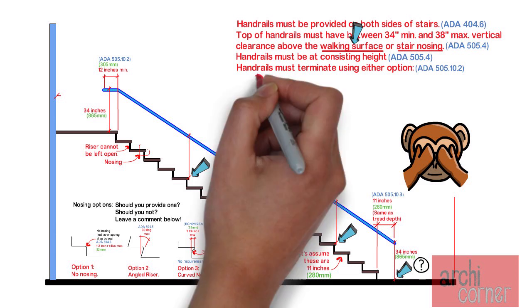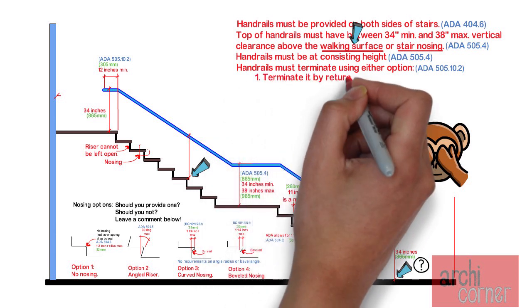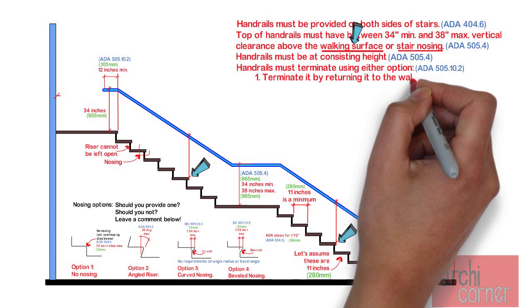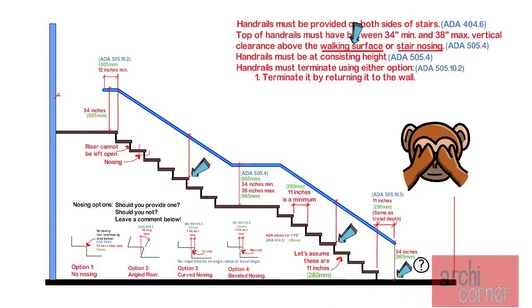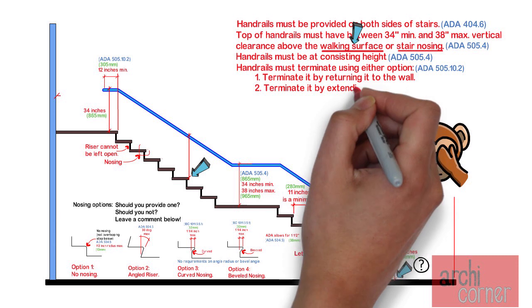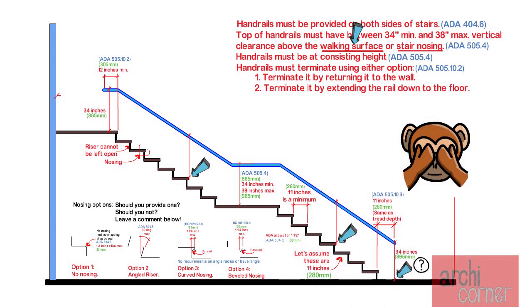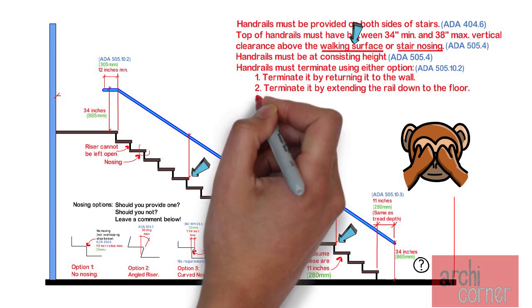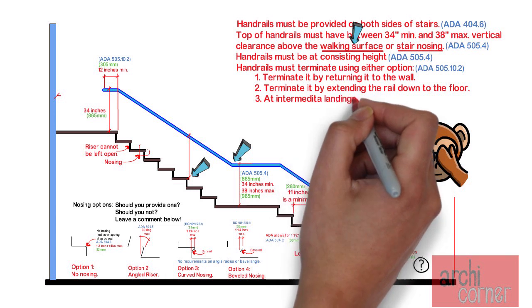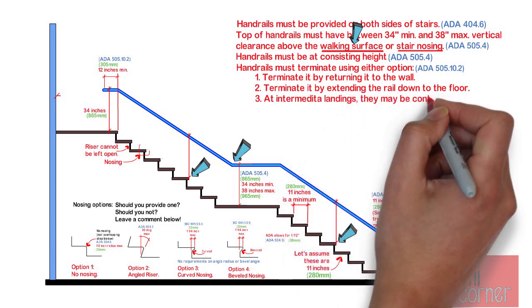Option number one: if there is a wall or similar surface adjacent to the handrail, you may terminate it by returning it to the wall itself. Or option number two: if there is no wall or similar surface to return the handrail to, such as a rail or something of that sort, you can bring it down to the floor. Now let's not forget about the intermediate landings. You can treat intermediate landings just as a top of a stair, bottom of a stair condition, or as shown here, you may just make it easy and have one continuous handrail.